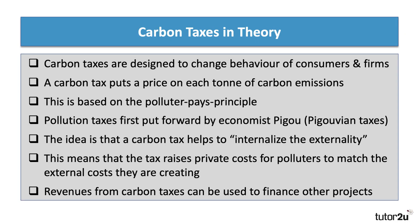So a quick explanation of how a carbon tax works in theory. Key point: a carbon tax is designed to change the behaviour of consumers and firms by changing the relative price of things that use, for example, lots of energy. A carbon tax puts a price on each tonne of carbon emissions, and this is based on the Polluter Pays Principle. Pollution taxes were first put forward by the economist Albert Pigou — sometimes called Pigouvian taxes — and the idea is that the carbon tax helps to internalise the externality. The tax increases the marginal private cost for the polluter, hopefully closer towards the external costs they're creating, which reduces output and takes the economy closer to a social equilibrium.